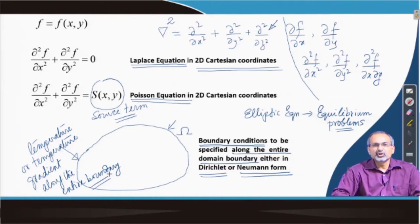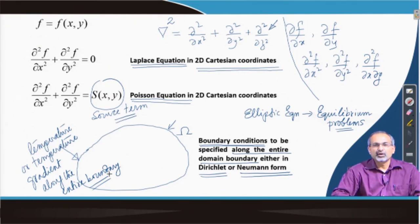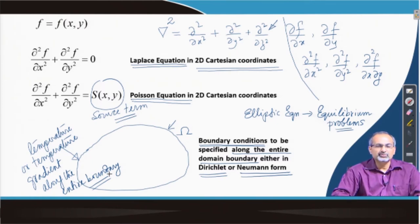Laplace equation does not give you an answer to this transient problem — it will never tell you what goes on in between to reach the equilibrium temperature distribution. But it addresses the problem as a direct equilibrium problem itself, meaning: given a boundary condition, what will be the final temperature distribution at equilibrium state is what is answered by the Laplace equation. This aspect has to be kept in mind when we try to solve or interpret solutions of Laplace equation.